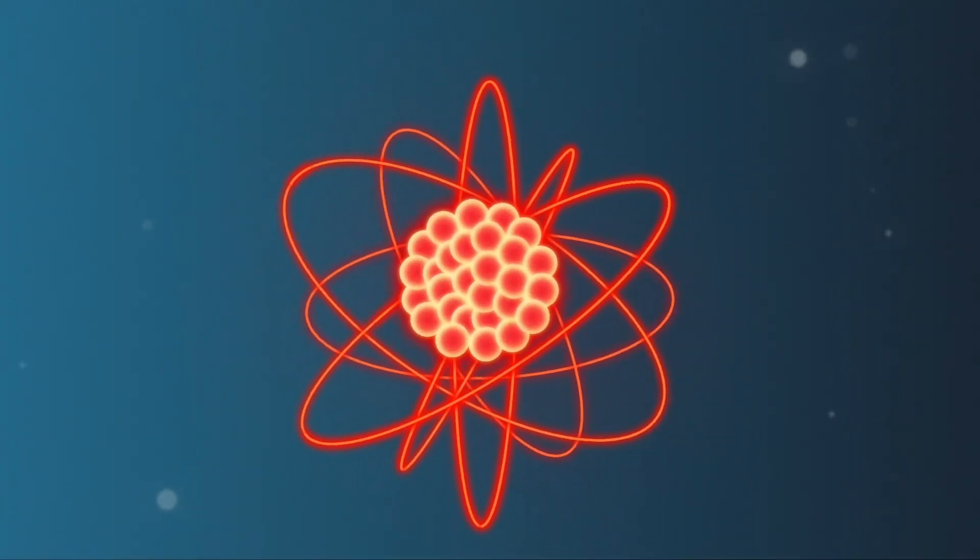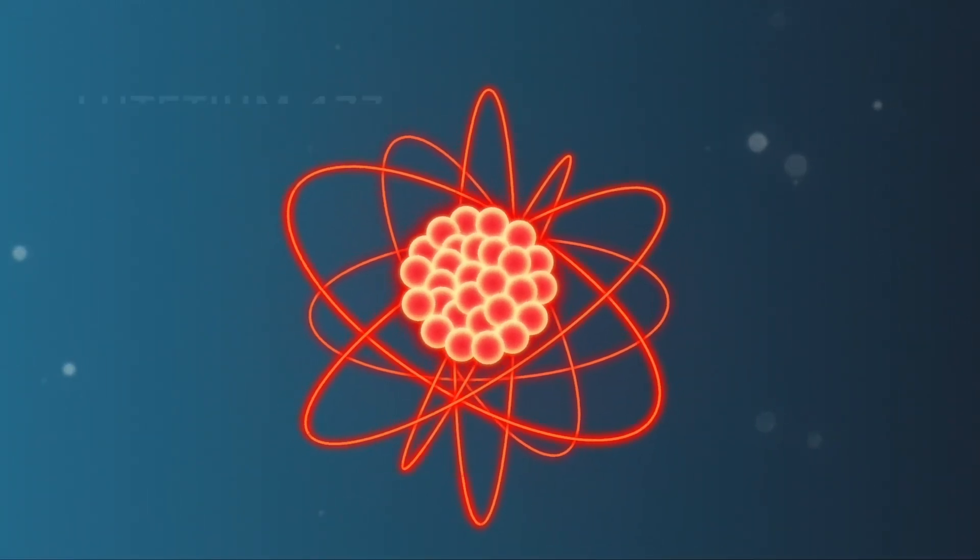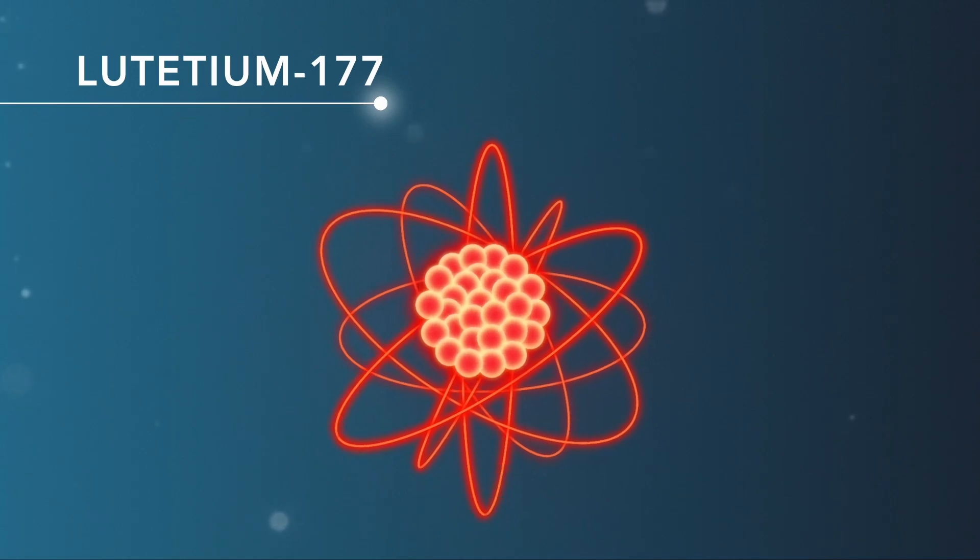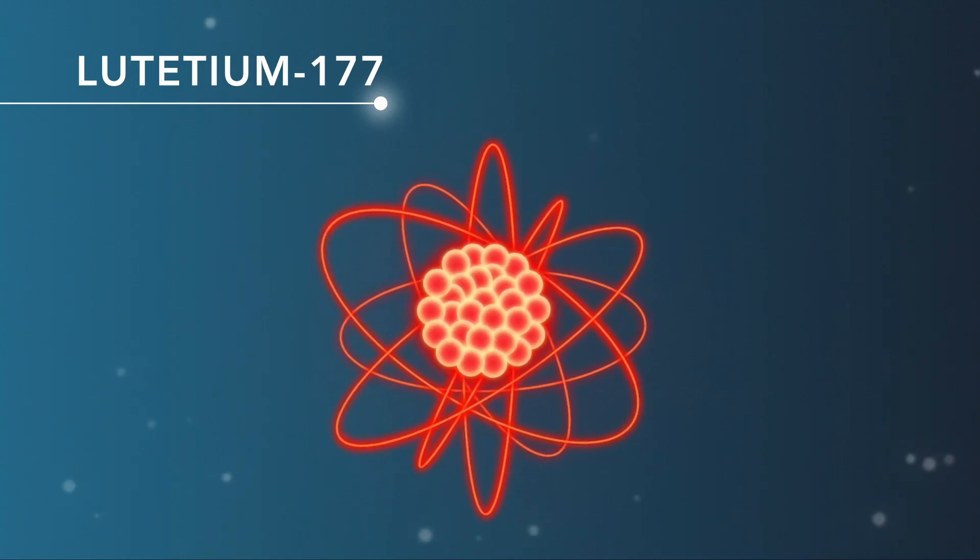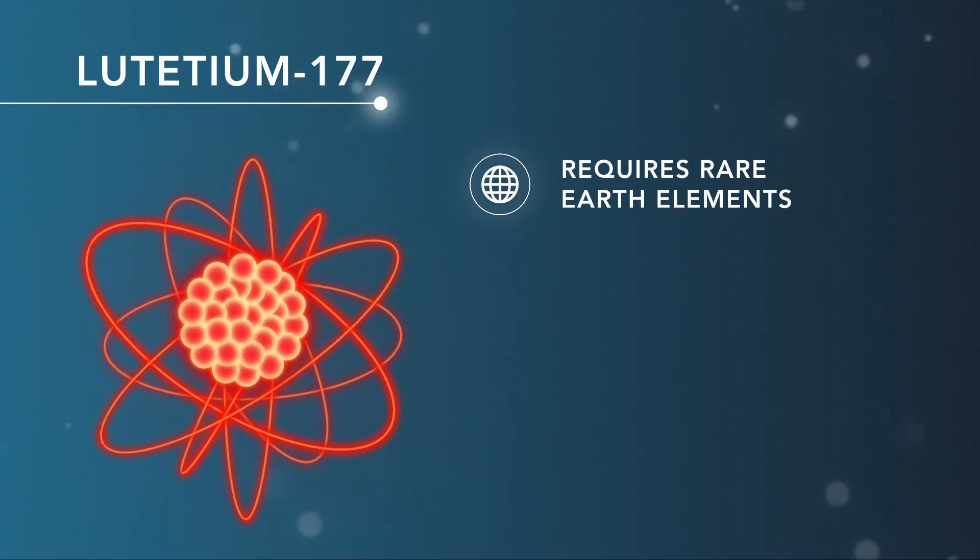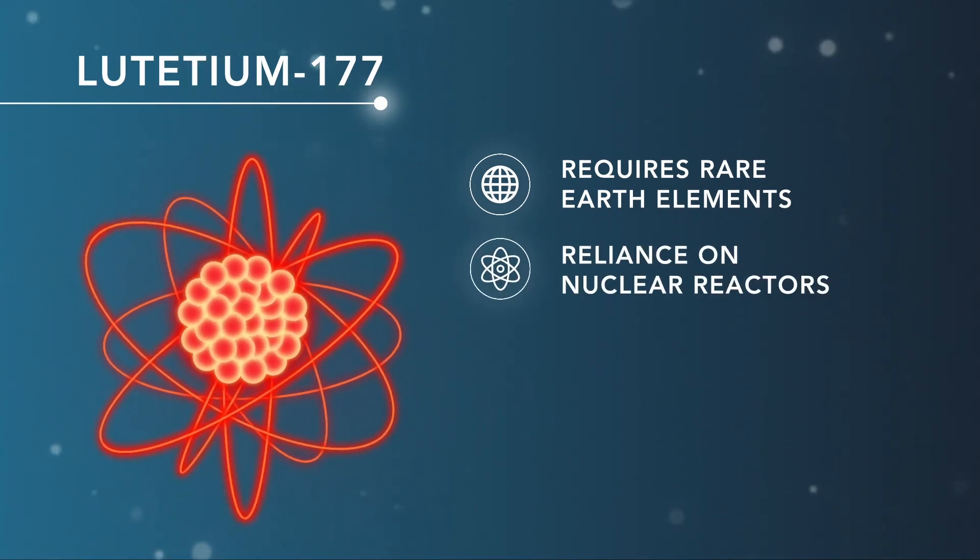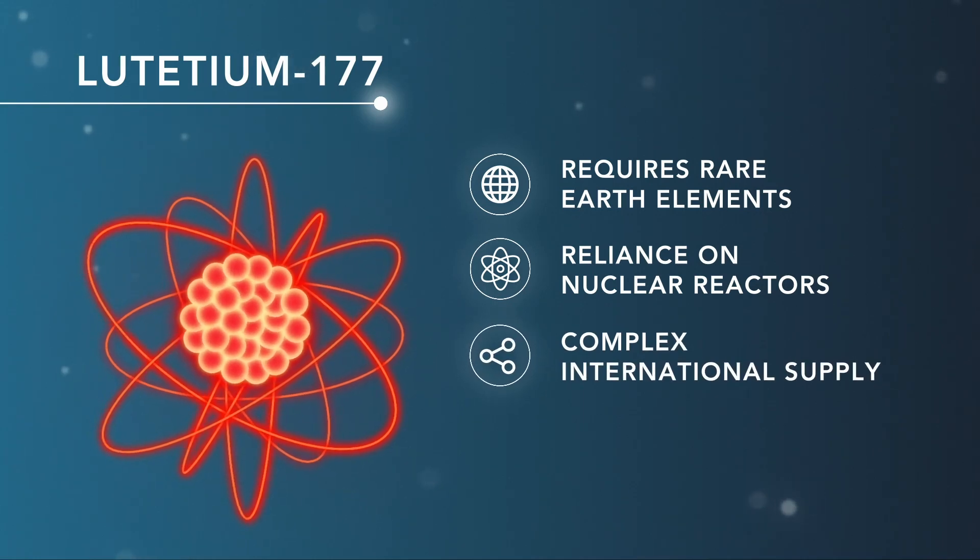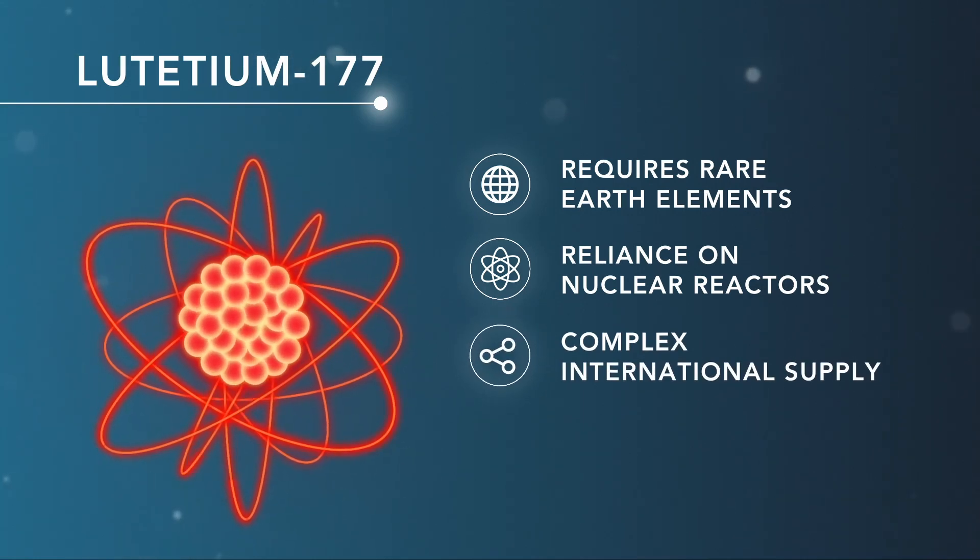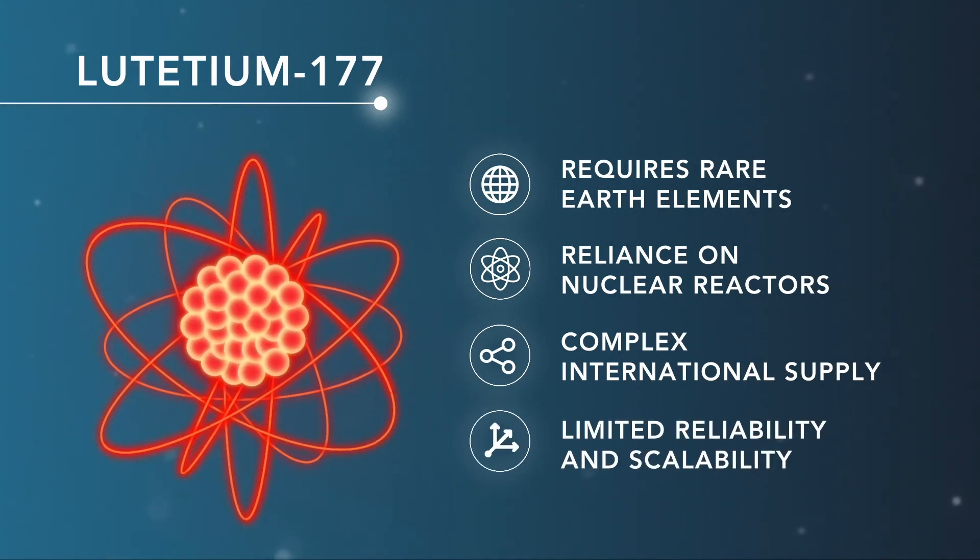A radionuclide commonly used in today's therapeutic radiopharmaceuticals is Lutetium-177. However, its production process is complicated, relying on rare earth elements, an aging fleet of specialized nuclear reactors, and requires complex international supply chains to bring final products to patients. These factors limit its reliability and future scalability to meet patient demands.